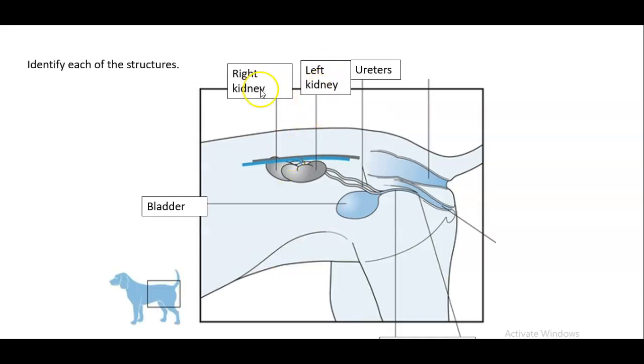Identify each of these structures. We have the right kidney, the left kidney, the ureters, and then the bladder. And just remember, in most mammals, the right kidney sits more cranial than the left kidney.